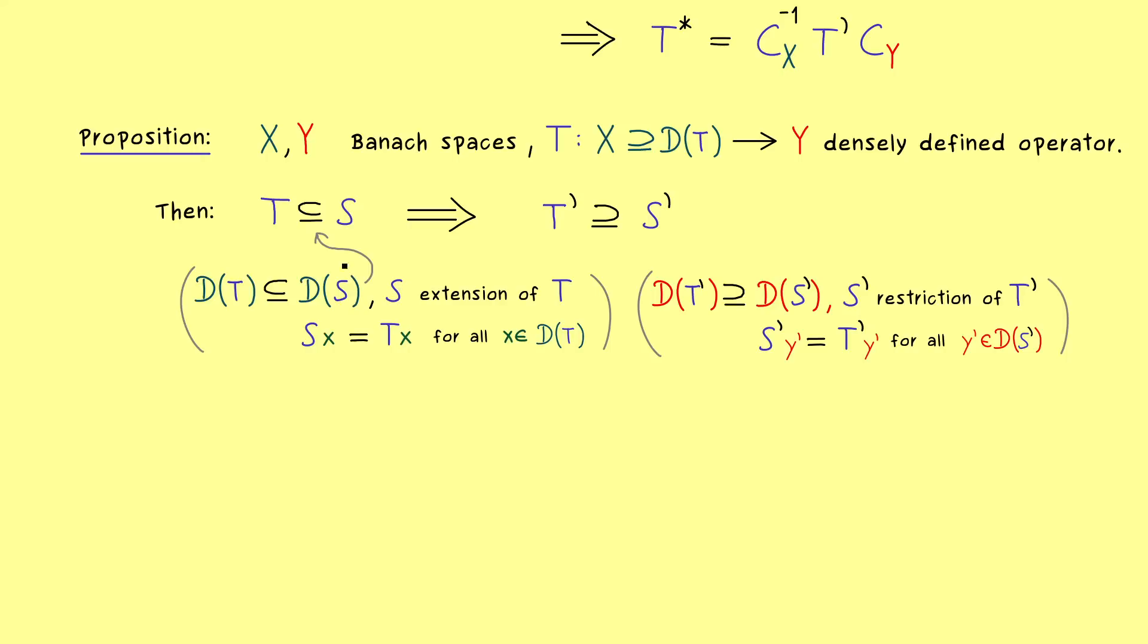So this is important to remember, if you make the domain bigger on one side, you make it smaller in the dual spaces. And now we already know, the same result we get immediately for the Hilbert space adjoints as well. And in this formulation you might already recognize, that for self-adjoint operators, where we want to have T is equal to T*, the correct choice of the domain is key.